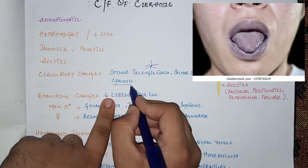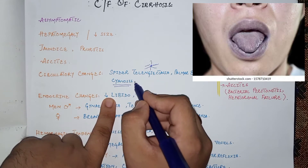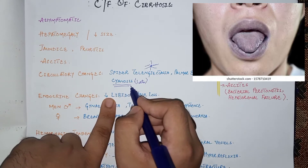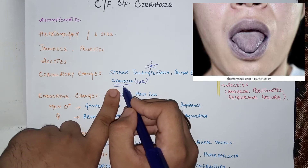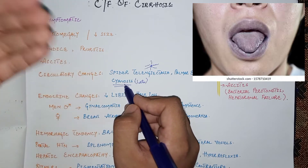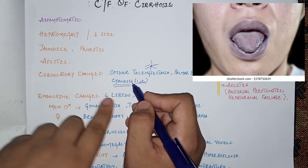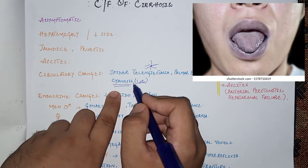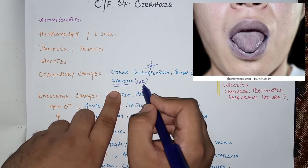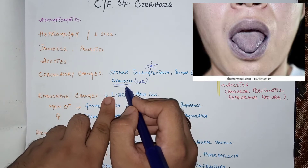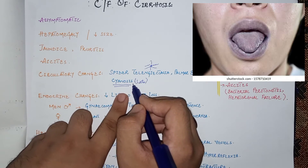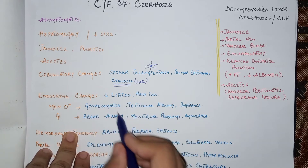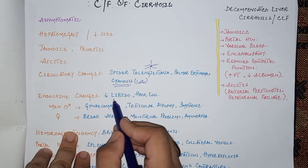Cyanosis is a very late and uncommon feature of cirrhosis. It occurs due to hypoxemia caused by portopulmonary syndrome, also called hepatopulmonary syndrome, where arteriovenous shunts form in the lungs, resulting in reduced oxygen levels in the blood.